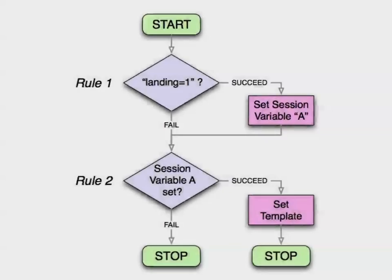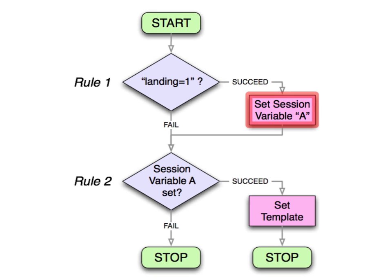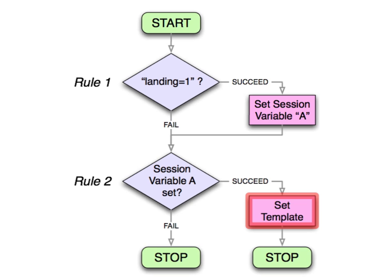We're going to use two rules in the MetaTemplate rule chain. The first rule will detect the URL parameter, and if it finds it, it will set a session variable to remember that it saw it. The second rule will detect the session variable and set the template if it finds that. In this way, MetaTemplate will remember the new template for that user for the rest of the session.